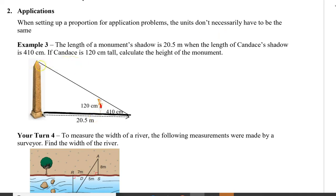Okay, so I can see that I have a monument, and the monument's shadow is 20.5 meters. And the length of Candace's shadow, where she's standing right here, is 410 centimeters. Now she's 120 centimeters tall. So using this information, we're going to calculate the height of the monument. Now, we have a big triangle here, with the monument and the shadow. So I'm going to draw another triangle here, a smaller one, to represent Candace and her shadow. So this is going to be 120 centimeters, and 410 centimeters here.